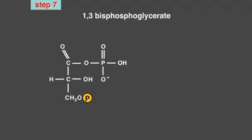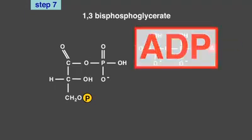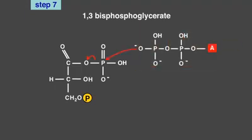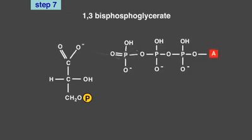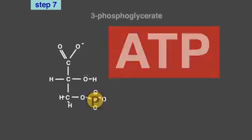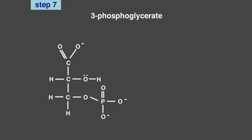In the seventh step, the enzyme phosphoglycerate kinase dephosphorylates 1,3-bisphosphoglycerate. The high-energy phosphate is transferred to ADP, forming ATP. The 3-carbon molecule is now 3-phosphoglycerate. Because this reaction occurs twice, once for each 3-carbon molecule, a total of 2 ATPs are generated. At this point, the energy investment from the first three steps has been paid back.